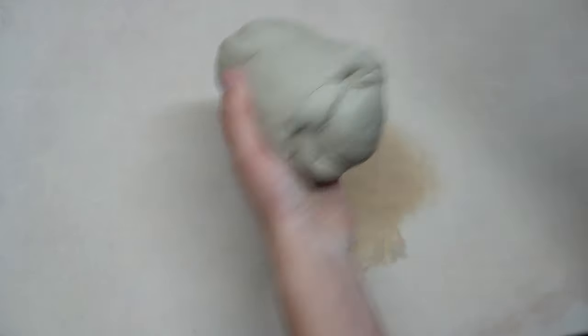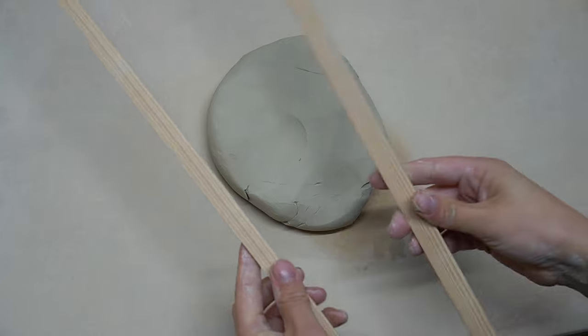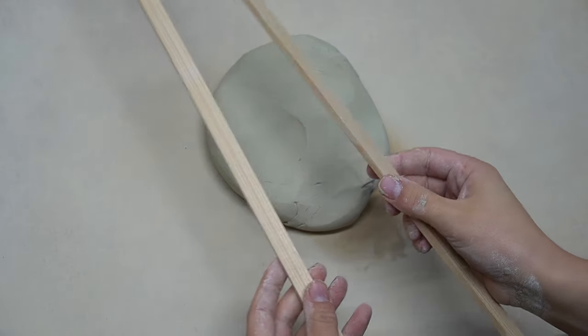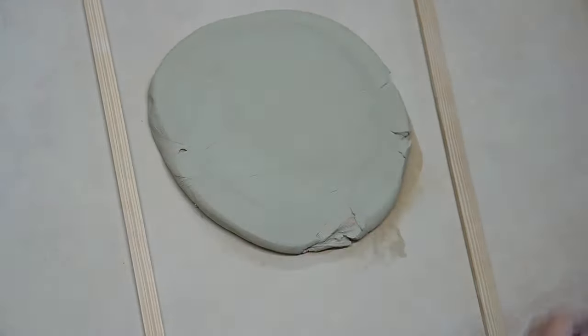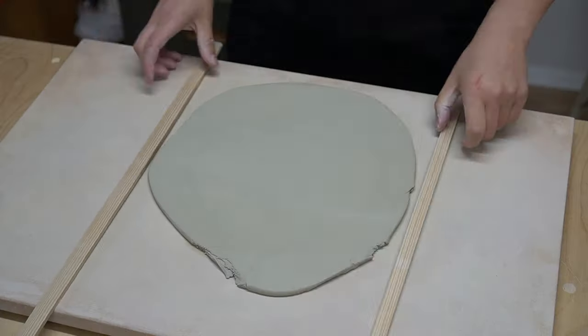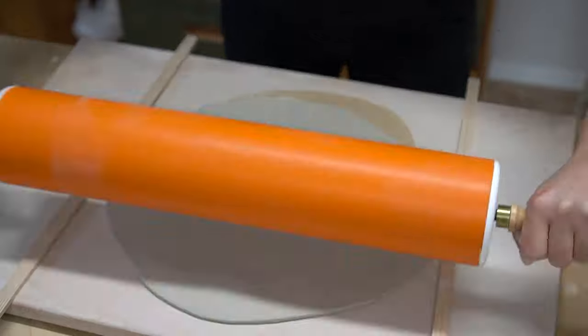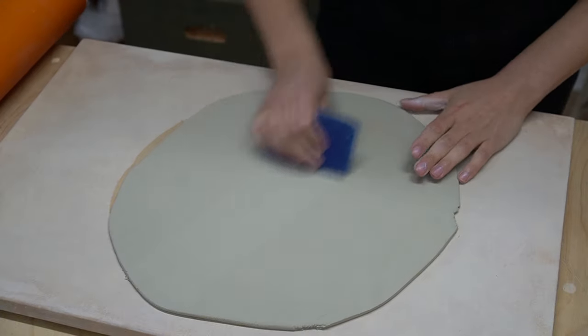So with every slab building project I'm going to start with wedging my clay and then rolling it out into a slab. I'm using these half centimeter thickness gauges here to get an even thickness. So my slab is going to be a half centimeter thick. You can use any rolling pin here. I've got this really big one that I love to use for larger slabs but just a typical kitchen rolling pin will also work.